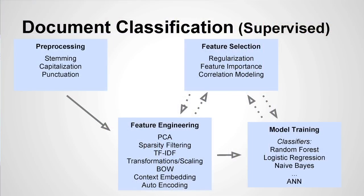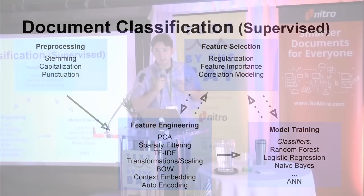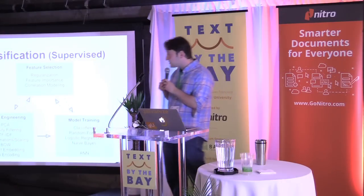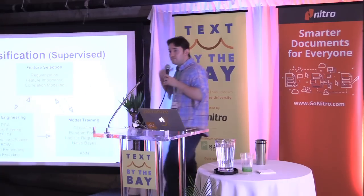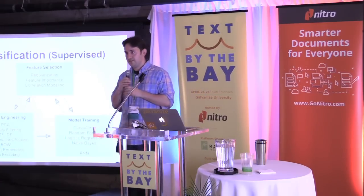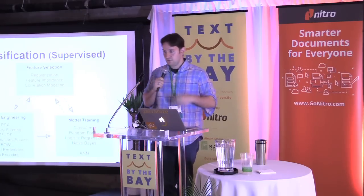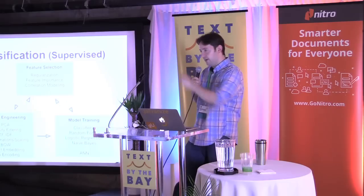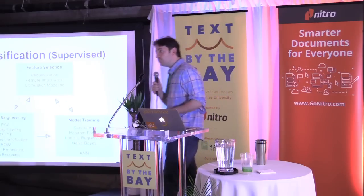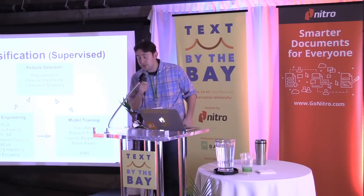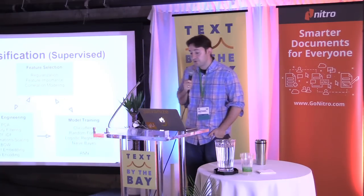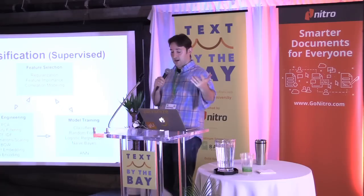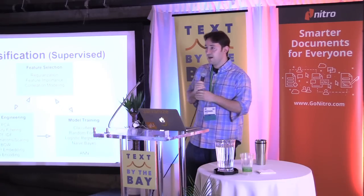A quick overview of what is the supervised paradigm for document classification. You start with your standard preprocessing — you do your stemming, your punctuation, you alter capitalization. There are libraries out there that will not reduce the 'A' in Apple when it's the proper name Apple, because that's confused with the fruit. Then you go through your feature engineering. There is a whole grab bag of options: PCA, sparsity filtering, TF-IDF is a very popular one, transforming, scaling, turning into bag of words, looking at context.